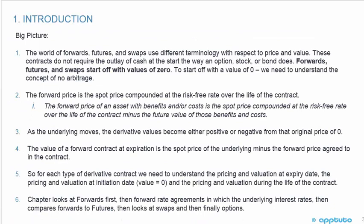This slide has some big picture information. Number 1: the worlds of forwards, futures and swaps use different terminology with respect to price and value. These contracts do not require the outlay of cash at the start the way an option, stock or bond does. Forwards, futures and swaps start off with values of zero. To start off with a value of zero, we need to understand the concept of no arbitrage. The forward price is the spot price compounded at the risk-free rate over the life of the contract. The forward price of an asset with benefits and/or costs is the spot price compounded at the risk-free rate over the life of the contract minus the future value of those benefits and costs. As the underlying moves, the derivative values become either positive or negative from that original price of zero.